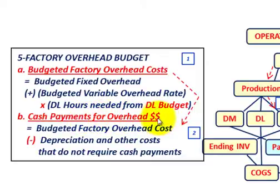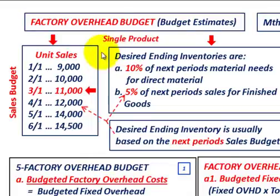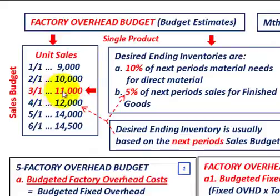Our calculations are budget estimates based on a single product, though you'd track all products for the total factory overhead budget. We're looking at the month of March. The sales department projects 11,000 unit sales for March and 12,000 unit sales for April. The desired ending finished goods inventory is 5% of the next period's sales.